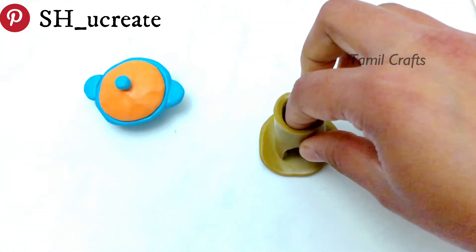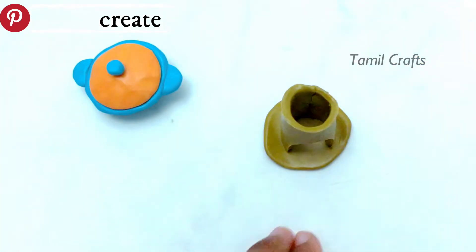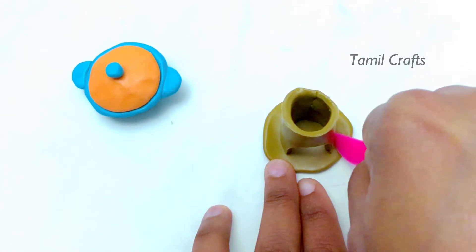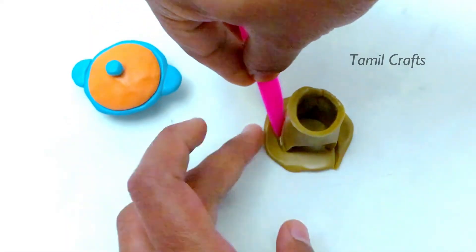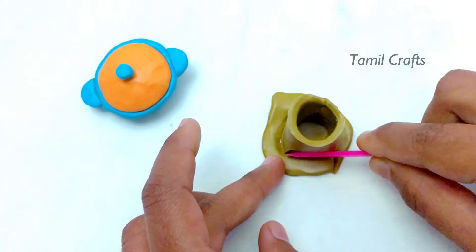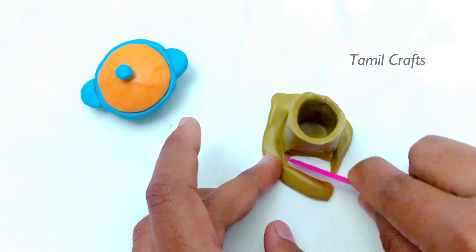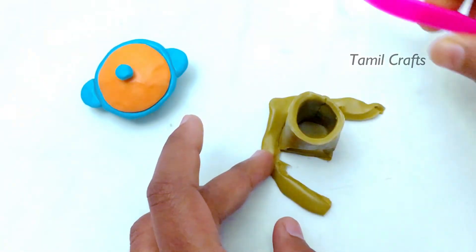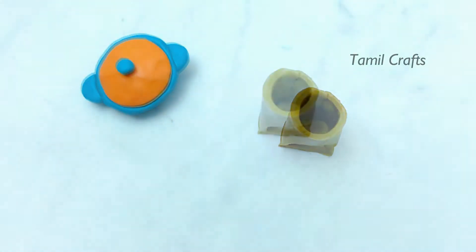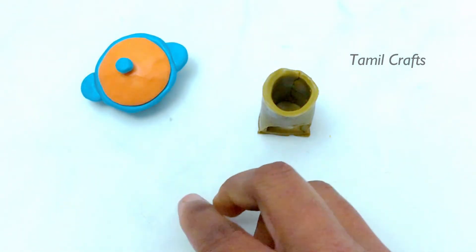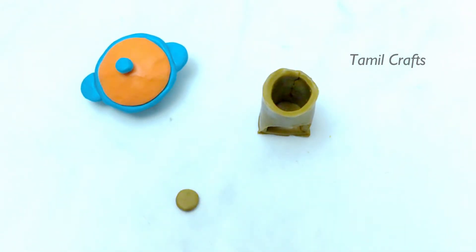I will cut it in the shape. I will make this flat. I will cut it like this. The tube is ready. Now we have to make a stand.